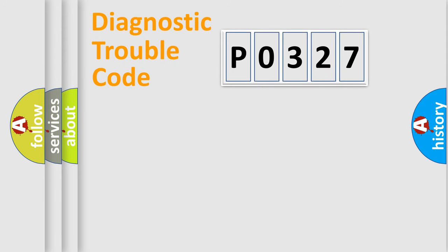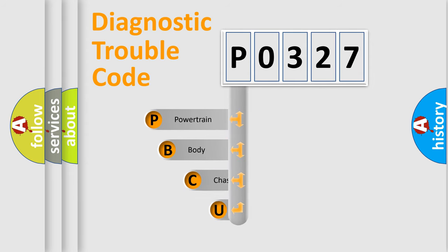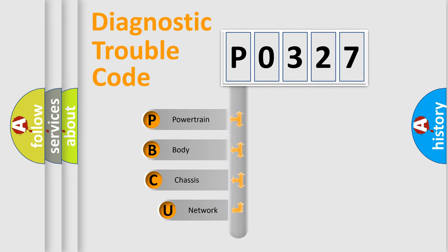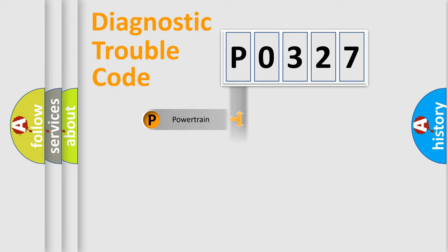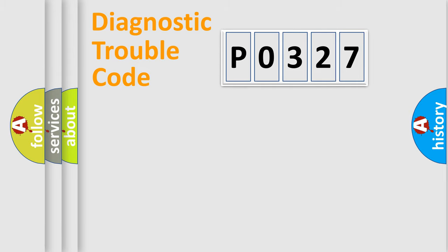First, let's look at the history of diagnostic fault code composition according to the OBD2 protocol, which is unified for all automakers since 2000. We divide the electric system of an automobile into four basic units: Powertrain, Body, Chassis, and Network.